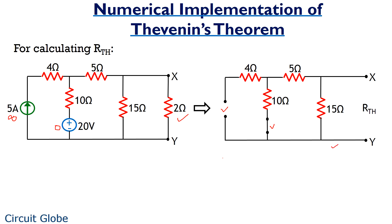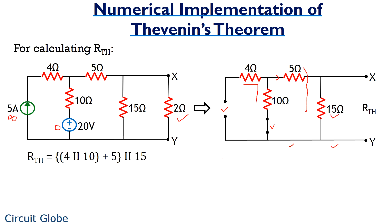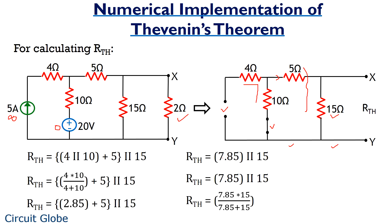So let's now calculate the equivalent resistance of this circuit. As we can see in this particular figure, the 4-ohm and 10-ohm resistors are in parallel combination with each other, while these two are in series with the 5-ohm resistance. Furthermore, this whole combination is in parallel with the 15-ohm resistance. On calculating, we get the value of Rth as 5.15 ohms.